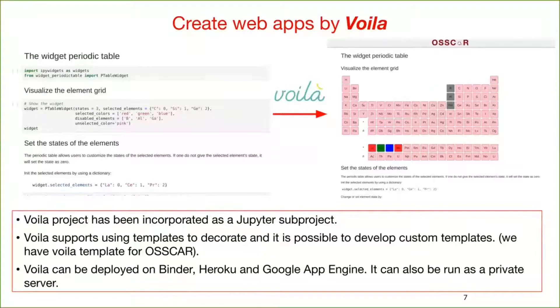So far, all these widgets are used inside the Jupyter Notebooks. In order to create web apps, we use the tool called Voila. Voila can render the Jupyter Notebooks into web pages. It hides all code cells and only shows the markdown and output cells from Jupyter. For example, on the left is the Jupyter Notebook for the periodic table app. By using Voila to render it, one can obtain the web app on the right.